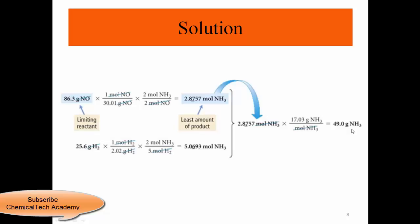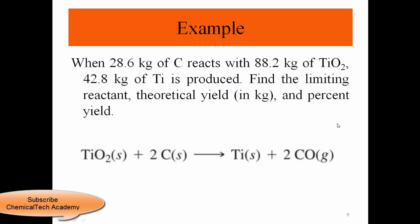Since NO produces the least amount of ammonia, NO is the limiting reactant. We then multiply by the molar mass to find the mass of ammonia produced.